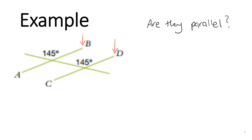If we know that those two lines are our possible parallel lines, then we know that the other line is our transversal line. If two lines are parallel, then they will have either a pair of corresponding angles, a pair of alternate angles, or a pair of co-interior angles. Looking at the two angles in this question, we have this angle here that's 145 degrees, and this angle here that's also 145 degrees. So what we want to know is: are they corresponding, alternate, or co-interior?